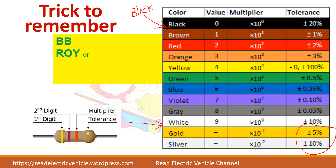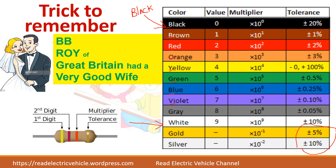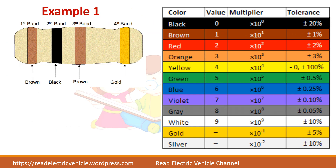Now let us see how to remember this sequence. The mnemonic is: B B Roy Great Britain Very Good Wife — so B B R O Y G B V G W. If you remember this, you can recall the sequence easily. The only confusion is whether the first B is for black, brown, or blue — but remember, the sequence always starts with black and ends with white, so the first B is always black.